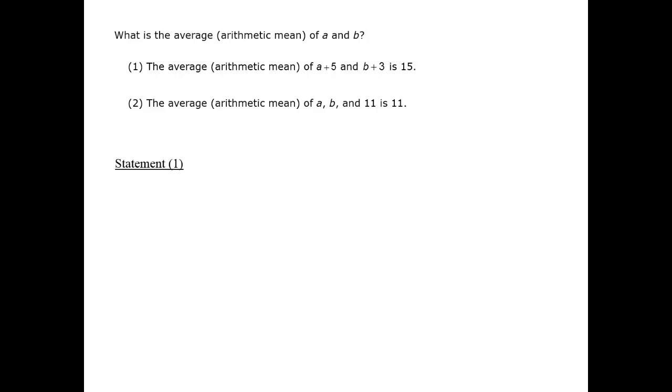The statement tells us that the sum of the two, divided by 2, is 15. Therefore, multiplying both sides by 2, we obtain the following. Collecting the two terms, 5 and 3, and subtracting from both sides gives us A plus B equals 22.